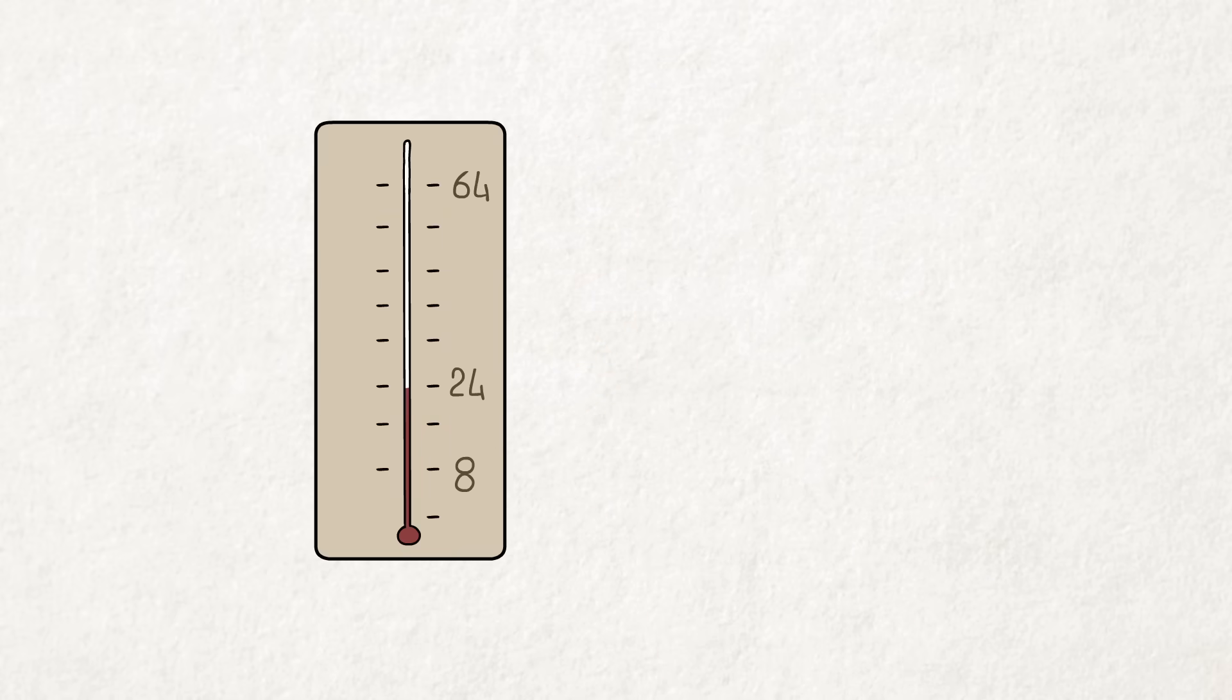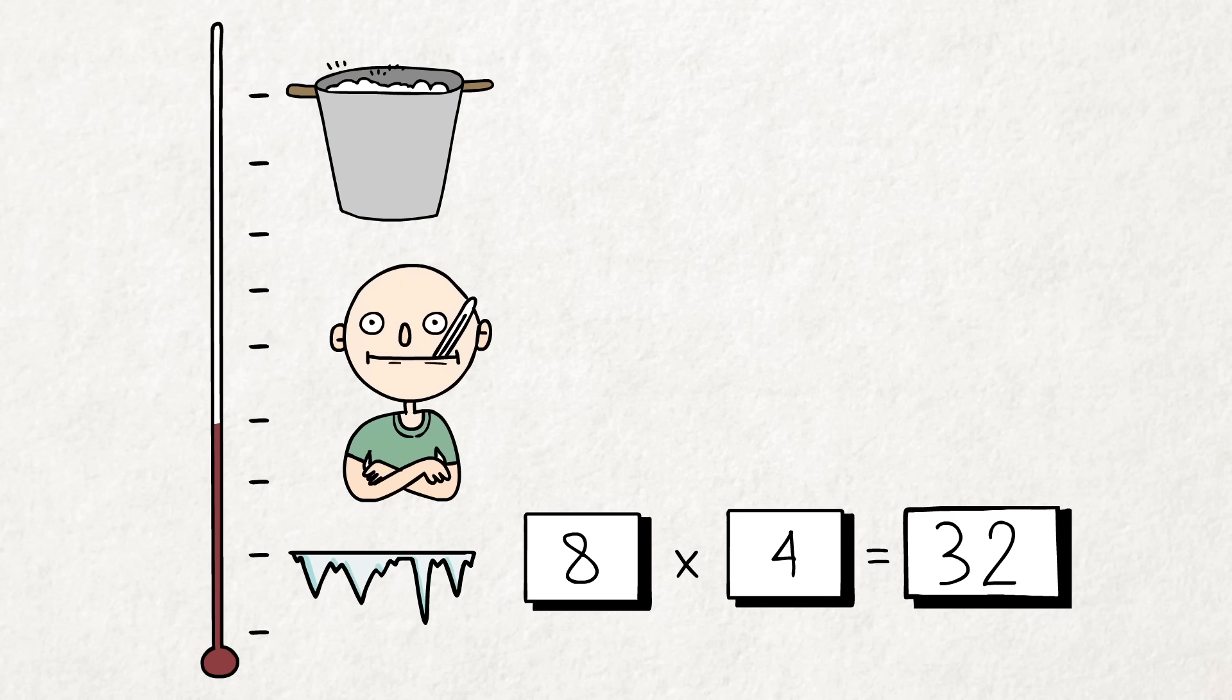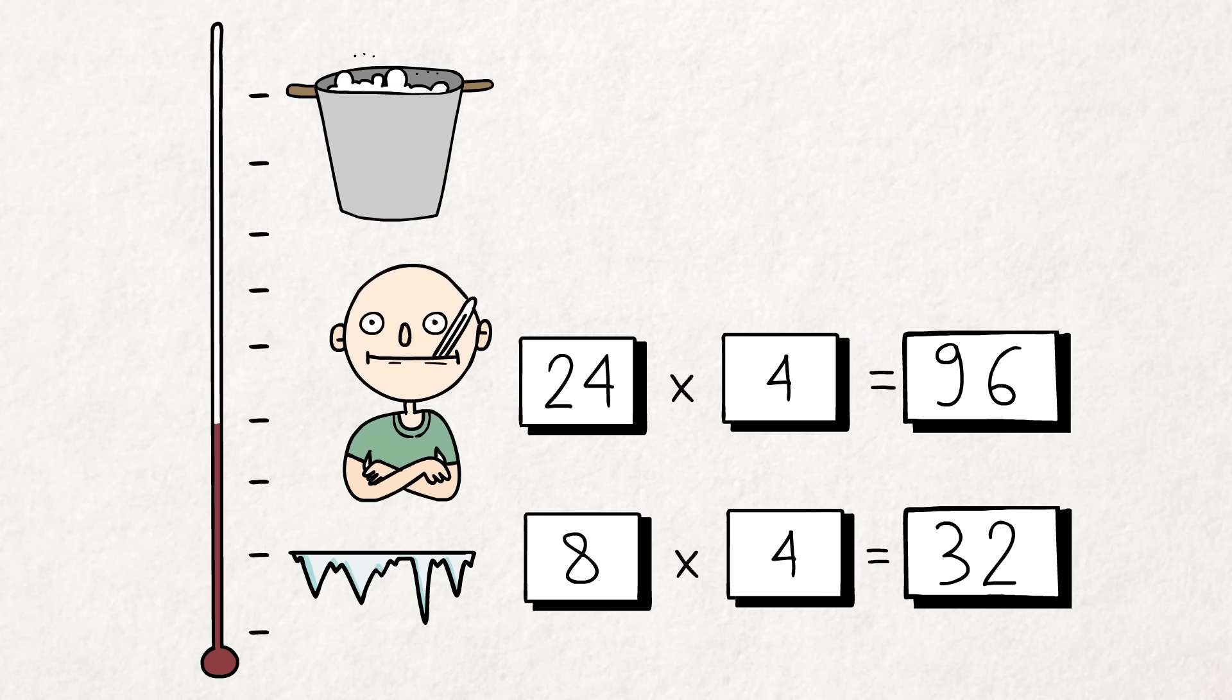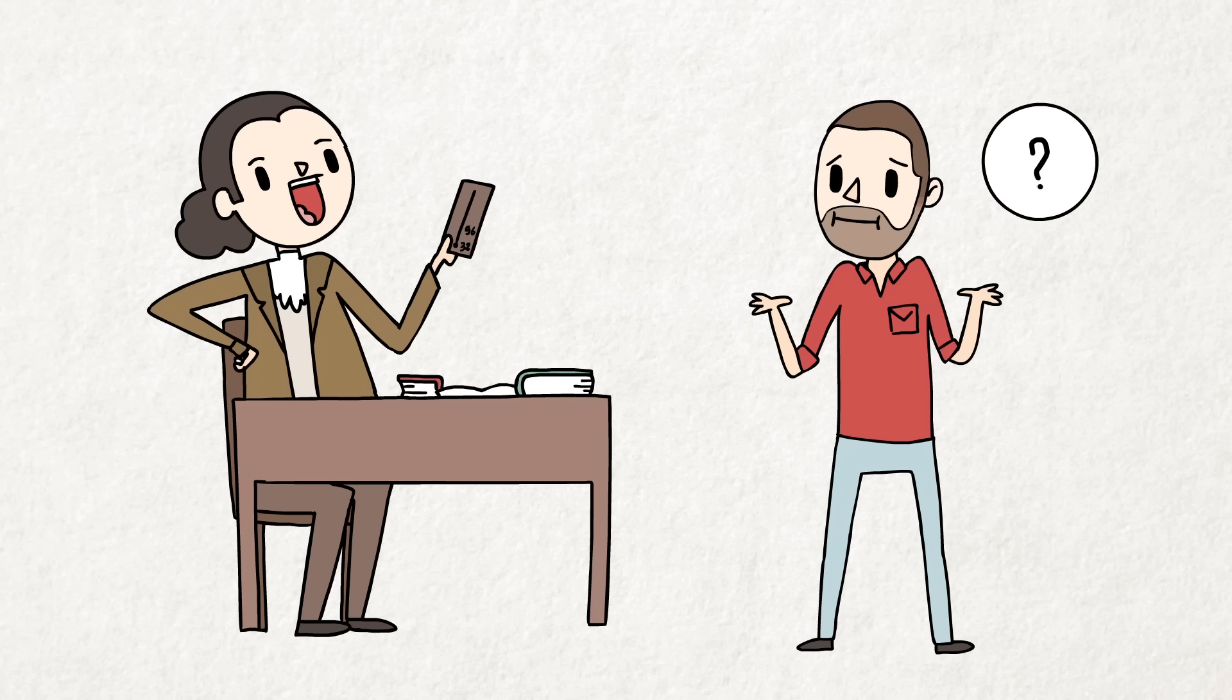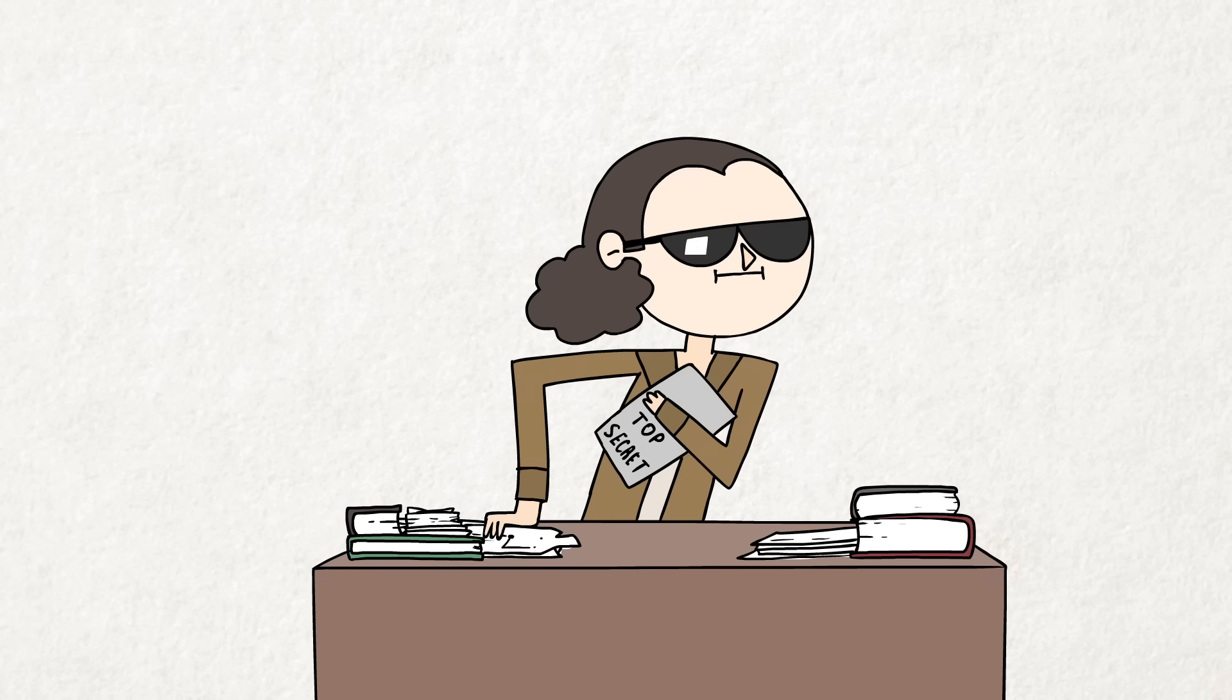But then, at some later point, Fahrenheit multiplied all numbers on his scale by 4, setting freezing point to the now familiar 32 and body temperature to 96. It's unclear exactly why he did this. He may just have wanted finer precision in his measurements. But I think there was a better reason.